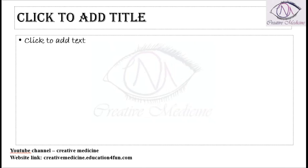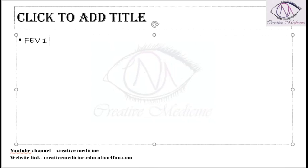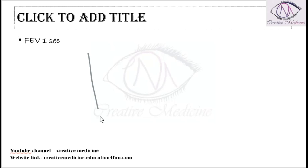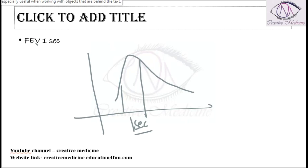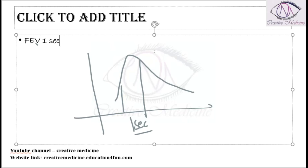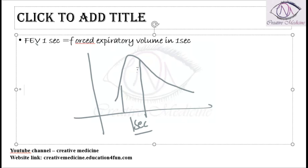Now there is one important thing. This peak expiratory flow rate will correlate with forced expiratory volume in one second. Forced expiratory volume in one second is the amount of air that the patient expires in one second. This forced expiratory volume in one second is more when compared to other seconds, meaning the patient maximally expires in the first one second and slowly the expiratory rate decreases.